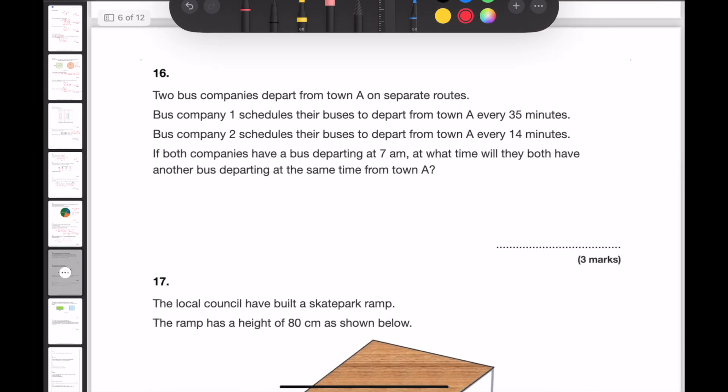Question 16. Two bus companies depart from town A on separate routes. Bus company 1 schedules their buses to depart from town A every 35 minutes. Bus company 2 schedules their buses to depart from town A every 14 minutes. If both companies have a bus departing at 7am, at what time will they both have another bus departing at the same time from town A? To answer this question, I'm looking for the lowest common multiple of 35 and 14. I'm going to split both 35 and 14 into product prime numbers. 35 can be split into 7 times 5. And 14 can be split into 2 times 7.